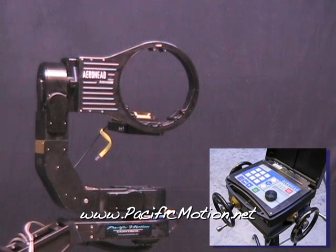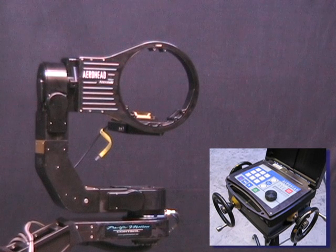Today I'd like to show you the Arrowhead remote head. In this configuration it has three axes of motion: pan, tilt, and roll.